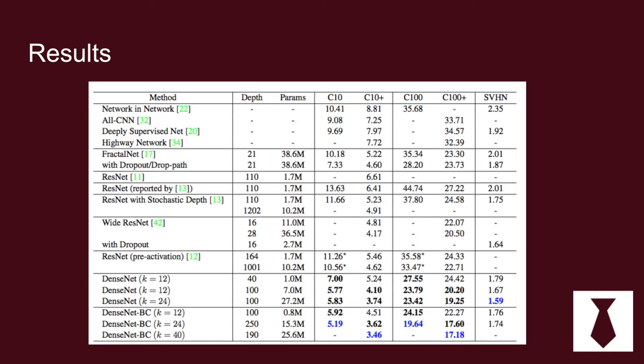These are the results presented in their paper comparing DenseNet to previous models. They achieve state of the art on all of the most popular academic datasets like CIFAR-10, CIFAR-100, and Street View House Numbers. Thanks for checking out Henry AI Labs and this DenseNet explanation — please subscribe and leave a comment if you have more questions about this paper.